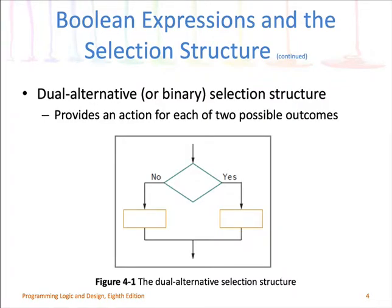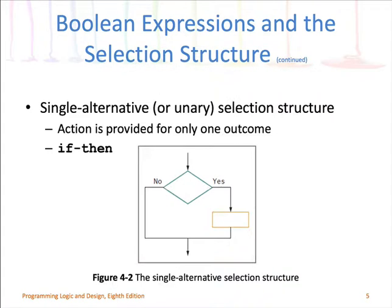We've seen this before — it was called a Dual Alternative Selection Structure in Chapter 3. You're coming along in your logic, you hit a decision point, you answer a question, and if the answer is yes, we go one way; if it's no, we go the other. Yes is true, no is false. If we only need to do something if the expression is true, then we have a single alternative selection structure.